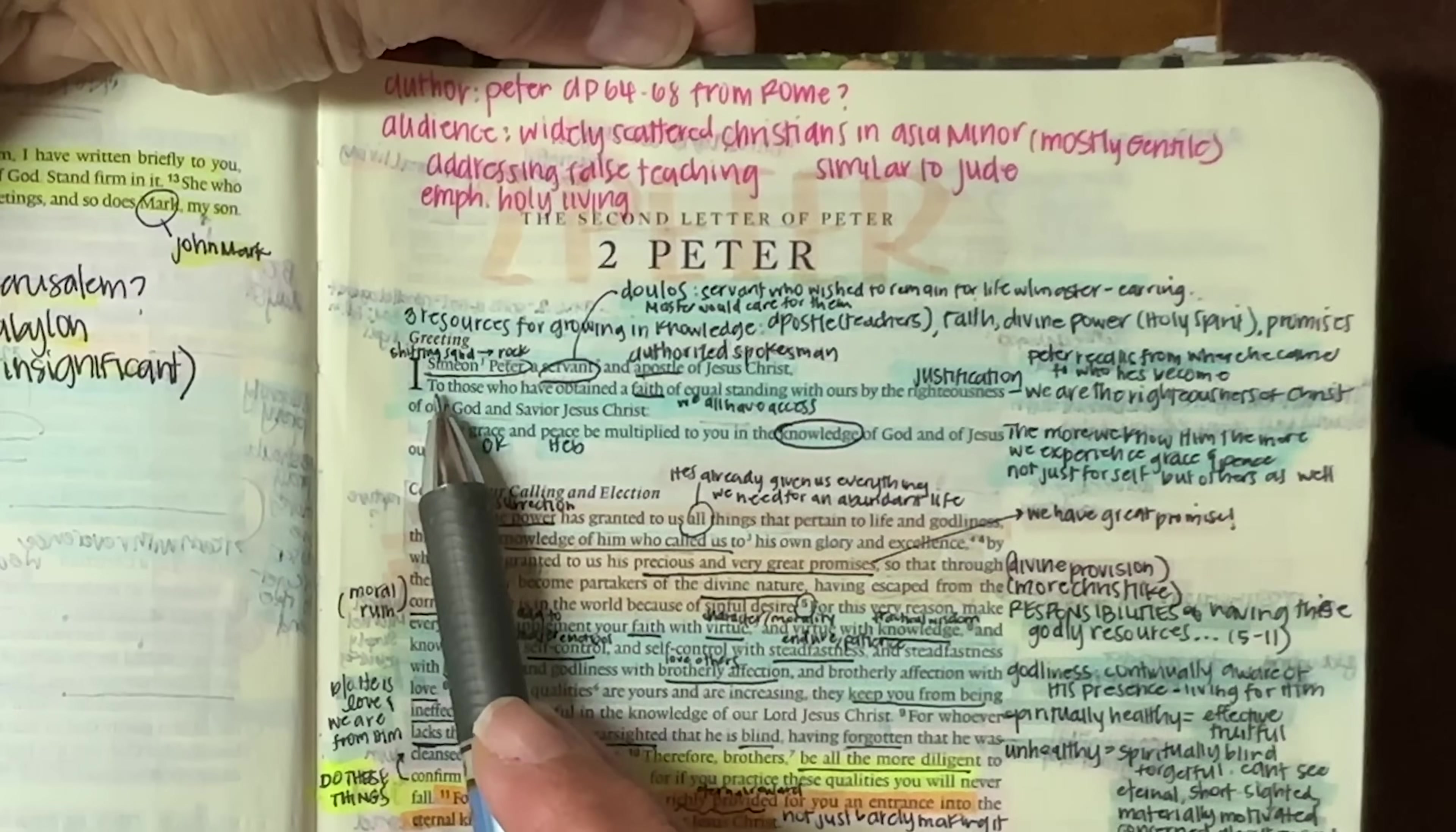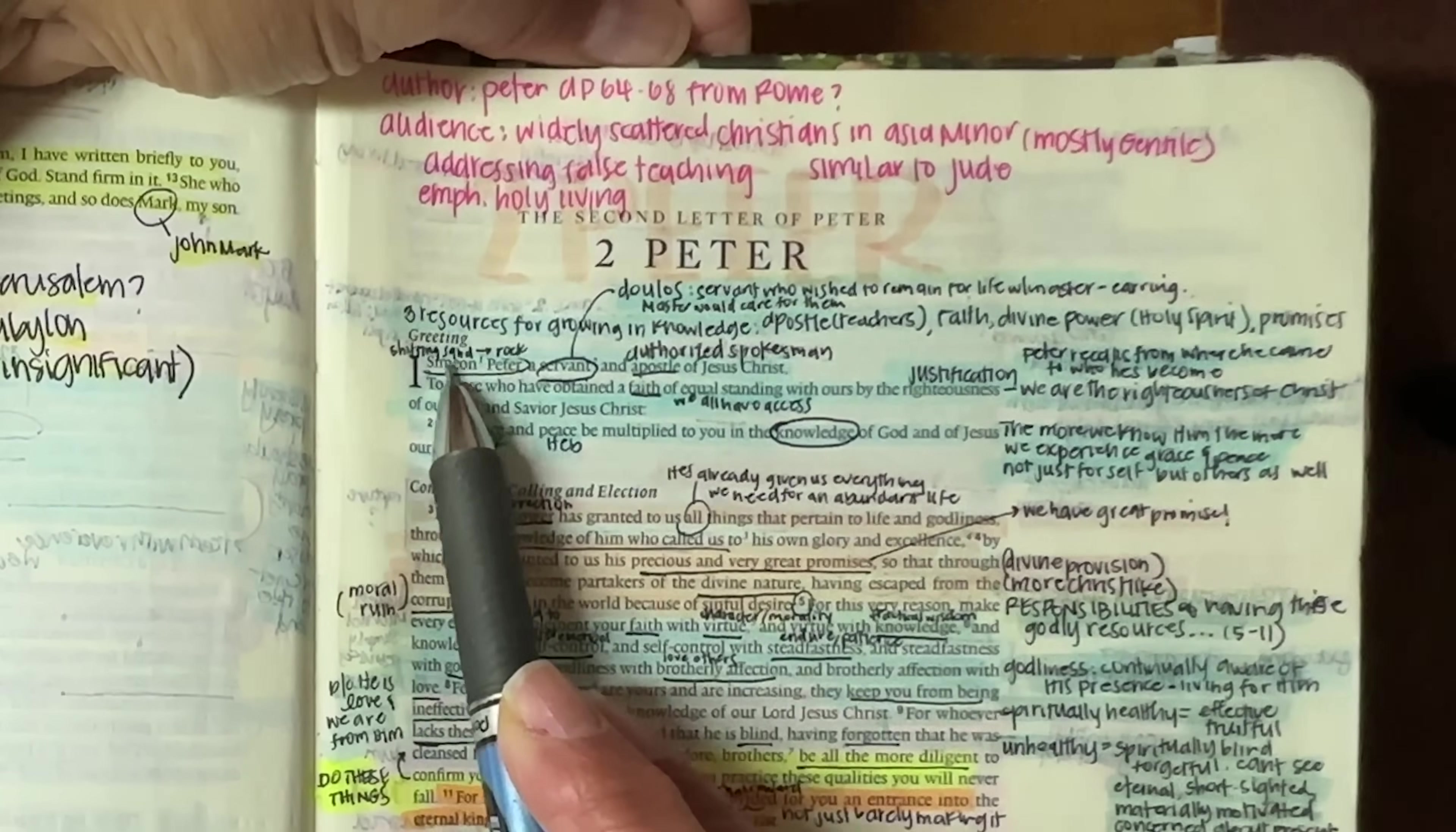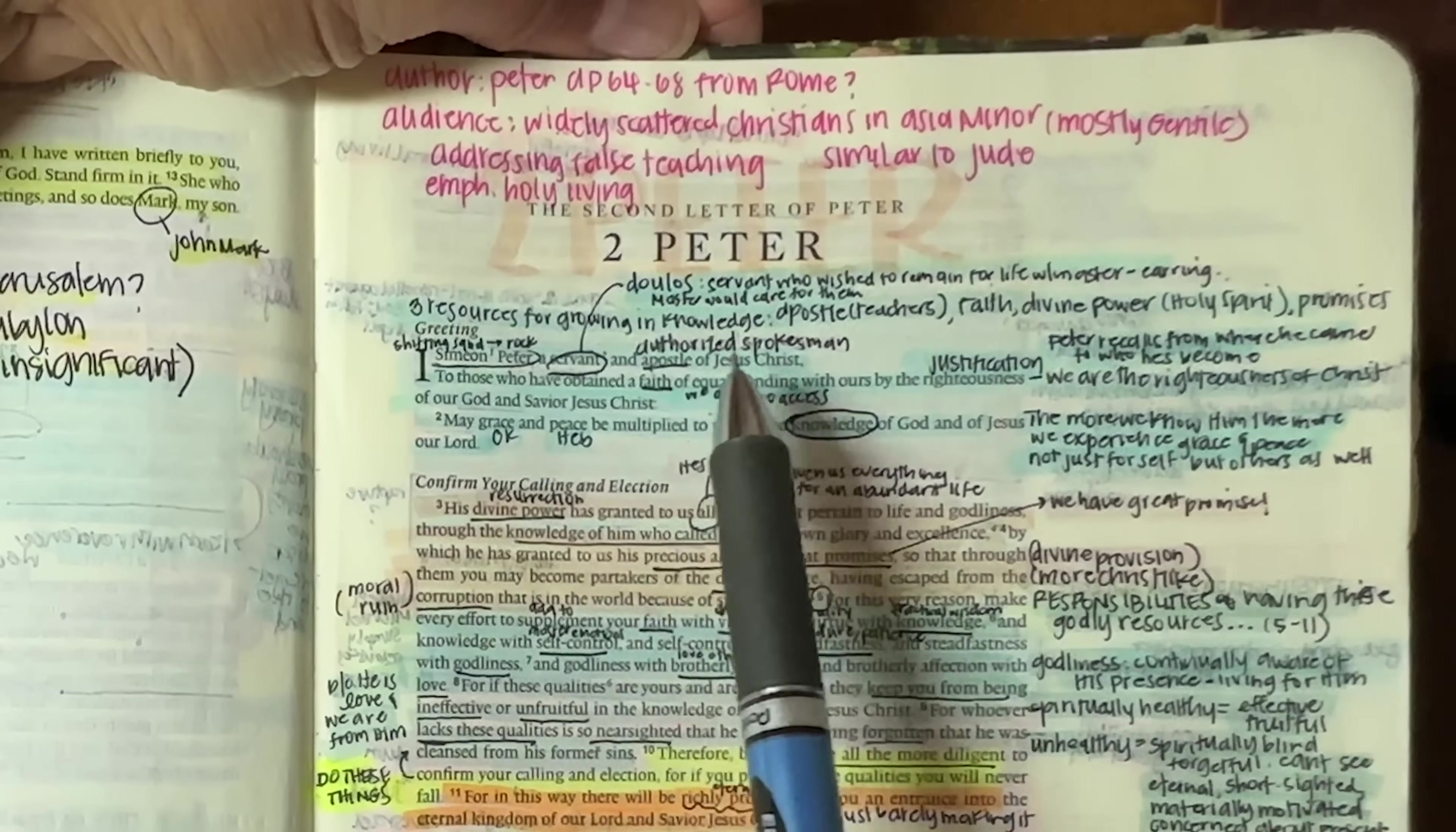So we start off here in chapter one with a greeting from Peter. Simeon Peter. Notice he uses both of his names. The first name, either Simeon or Simon, however you want to refer to him, meant shifting sand. But Jesus changed his name to Peter, which means rock, which comes from the Greek term Petros.